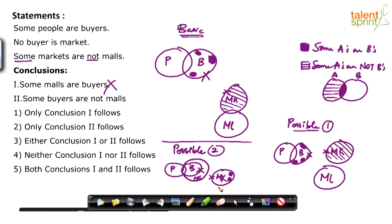In possible diagram two, all the buyers are becoming malls. If all buyers are malls, can we say some buyers are not malls? Tell me one buyer which is not malls here — all the buyers are malls. The moment all buyers become malls, 'some buyers are not malls' becomes false. So conclusion two is wrong. Conclusion two satisfied the basic diagram and possible diagram one, but did not satisfy possible diagram two. A conclusion is a definite conclusion if and only if it satisfies all the diagrams. So neither one nor two follows — option four is the answer.